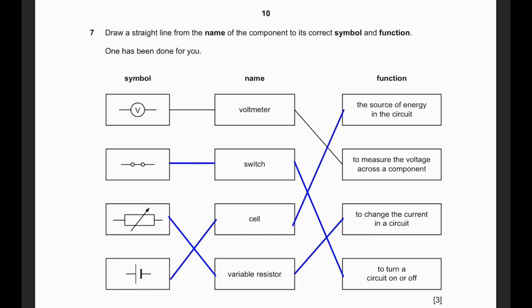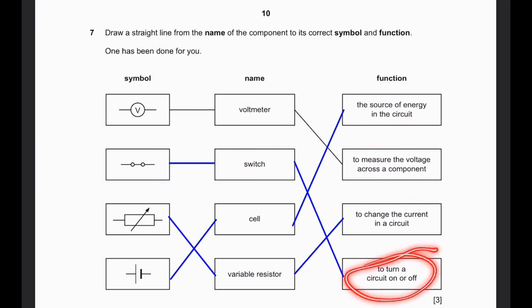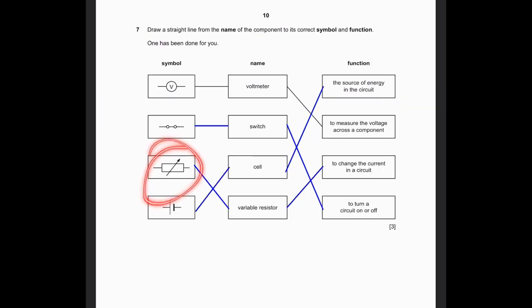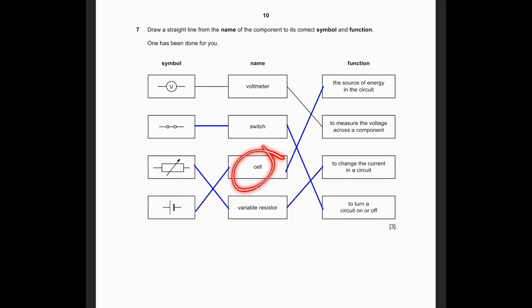Question 7. Draw straight lines from the name of the component to its correct symbol and function. The symbol V is the voltmeter, whose function is to measure voltage across a component. A closed switch turns the circuit on or off - open means off, closed means on. The variable resistor symbol has an arrow through it, indicating the resistance can be changed, which changes the current in the circuit. Increasing resistance decreases current; decreasing resistance increases current. The cell is the source of energy in the circuit.